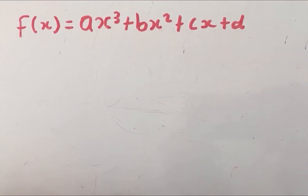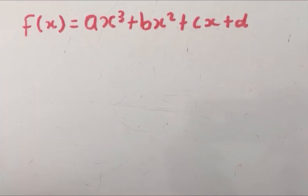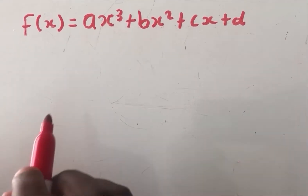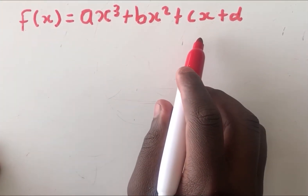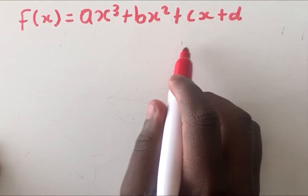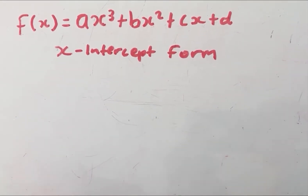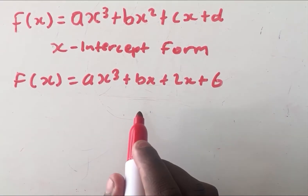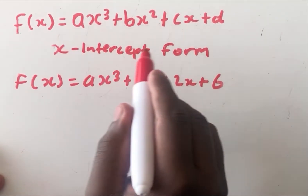Good day. Today I'm going to show you how to find the equations of the cubic graph. There are two ways to find the equations of the cubic graph. The first situation is where you are given all unknowns — if you are given all unknowns, you'll use the x-intercept form. The second way is where you are given two unknowns — if you are given two unknowns, you'll have to find the derivative. In this particular video, I'm going to deal with the first part.